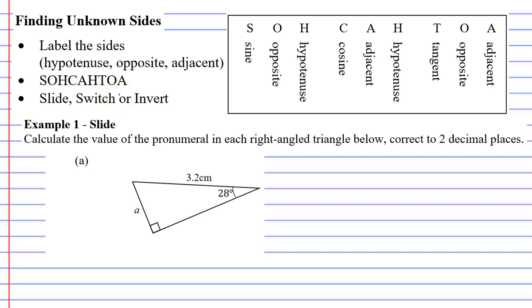In this video, we're going to calculate the value of unknown sides on a triangle. In example one, it is asking you to calculate the value of the pronumeral below, which is the side we are trying to find.